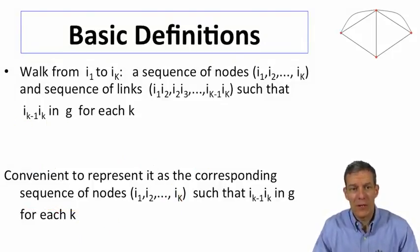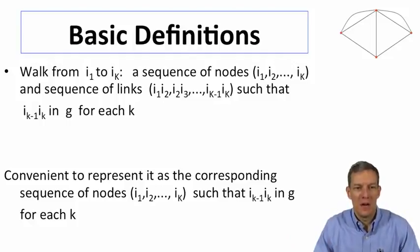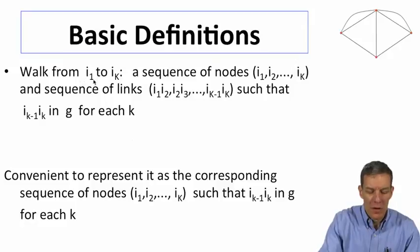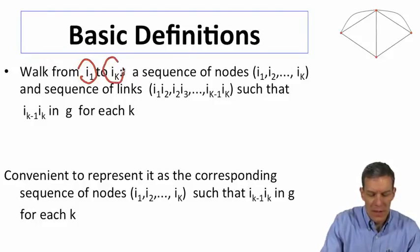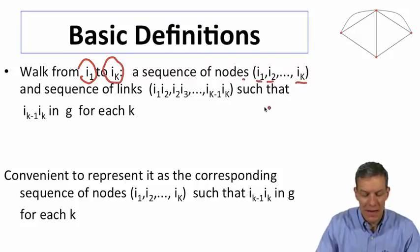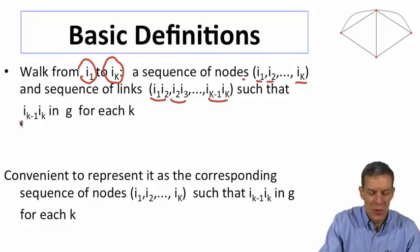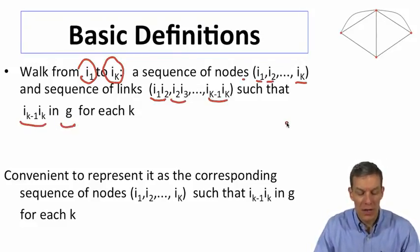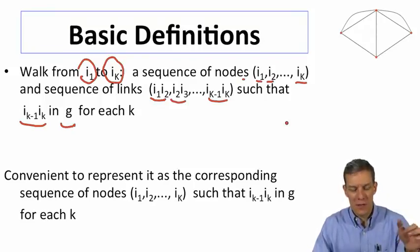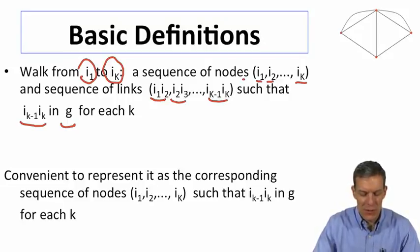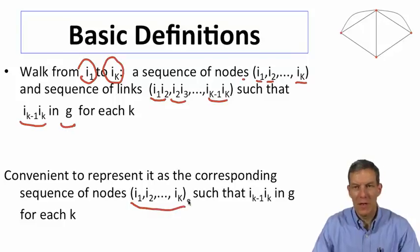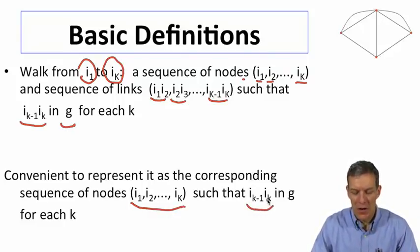Basic definitions. One thing we're going to want to keep track of is ways of navigating through a network, what are known as walks or paths. A walk in a network from node i1 to node iK is going to be a sequence of nodes, i1, i2, through iK and a sequence of links, i1 is connected to i2, i2 to i3 and so forth, ending up at k such that each one of those links is in the network g. A walk in a network from one node to another is a sequence of links that take you from that first node to the last node.